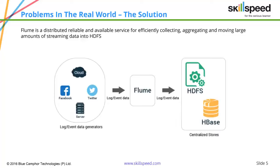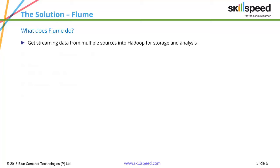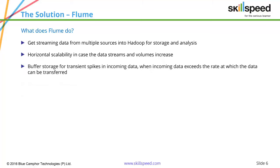When you want to store the data, Flume gives you a lot of options — you can either directly store it into HDFS or a real-time system such as HBase. Flume gets streaming data from multiple sources into Hadoop for storage and analysis — from a variety of sources like log files, Twitter data, and social media data. It also provides horizontal scalability in case data streams and volume increase. You can configure a Flume agent that is completely scalable depending upon the amount of data you want to stream, and it provides buffer storage for transient spikes in incoming data when data exceeds the rate at which it can be transferred.